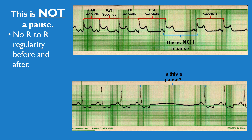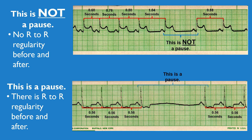Looking at this second example, we do have a larger gap so it appears there may be a pause. We measure the R to R intervals before and after this gap, and we do have consistent intervalling between the R to R intervals both before and after. Since they are consistently intervalled, this is a pause and not just a gap. To reiterate — what we need to look for to have an actual pause is consistent R to R intervalling before and after the gap.